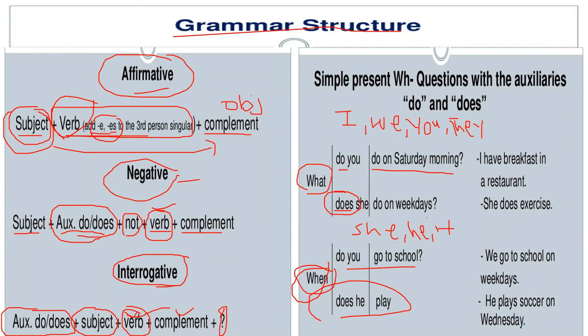Here are some affirmative examples: 'I have breakfast in a restaurant,' 'She does exercise,' 'We go to school on weekdays,' 'He plays soccer on Wednesday.' We can also make negative sentences like 'She does not like cricket,' 'He does not like cricket,' 'I do not play cricket.' There are many sentences that you can make.